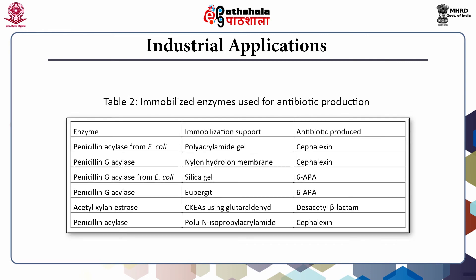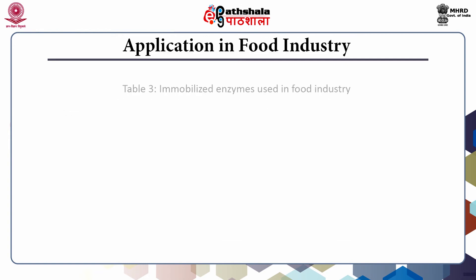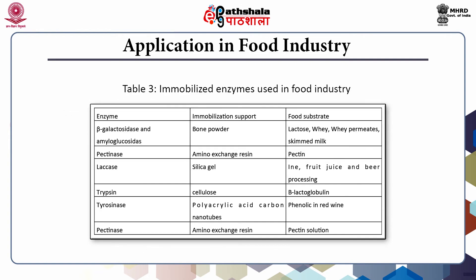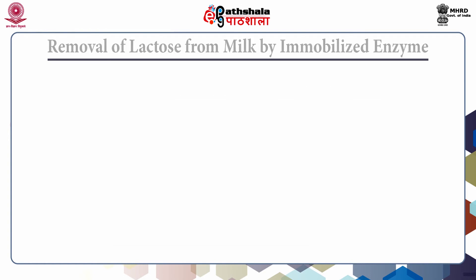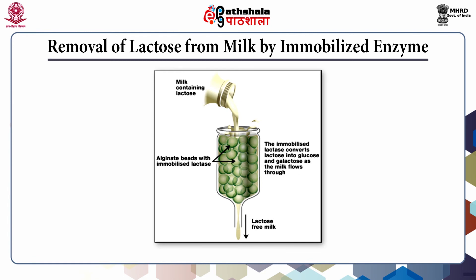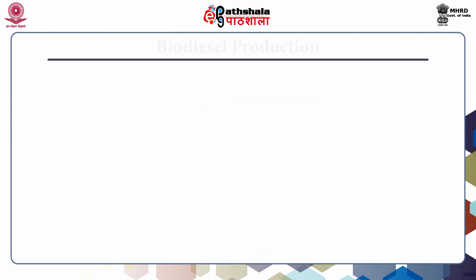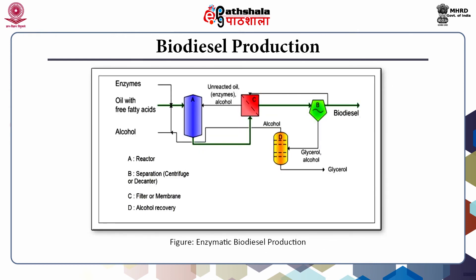Industry is another sector where immobilized enzymes are used depending on their catalytic activity; some are used for the production of antibiotics. The most commonly used enzymes in the food industry are trypsin, laccases, tyrosinases, pectinases, and starch-hydrolyzing enzymes. The application of an immobilized enzyme to remove lactose from milk is one example.